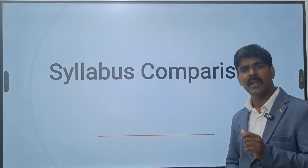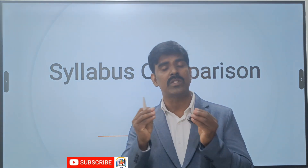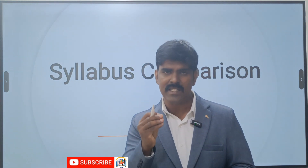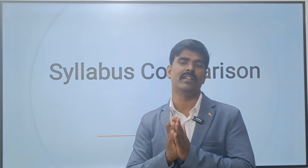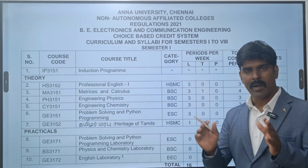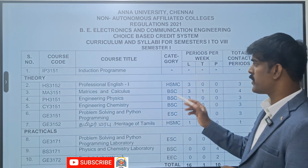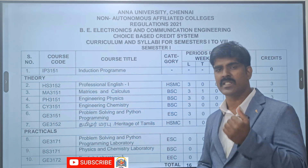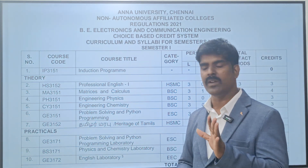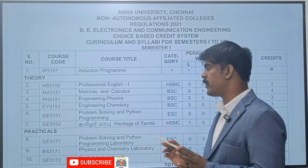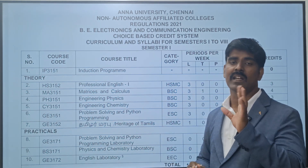So what is the actual difference between CSE and ECE in terms of courses? Many ECE students end up going into software roles. Let us look at the syllabus comparison. For EC, in the first year - first semester and second semester - you will be studying physics, chemistry, and math, plus a language like Tamil, and compulsorily Python in the first semester.